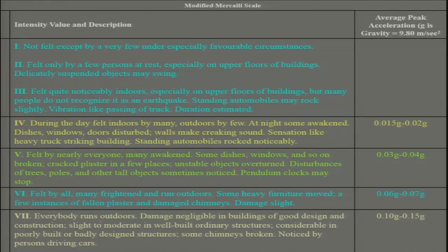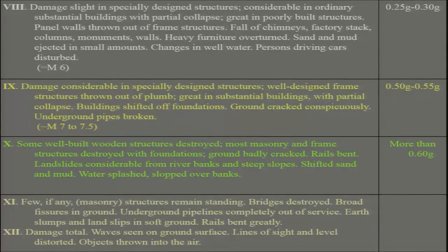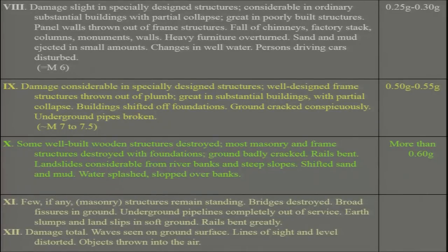If the building is well-designed, damage will be negligible, but slight to moderate in ordinary structures. If you have peak ground acceleration above 0.5 g, and then more than 0.6 g, you may experience that even wooden structures will be destroyed, most machinery and frame structures destroyed with foundations, resulting in major damage. Greater than 0.6 g will cause total damage.